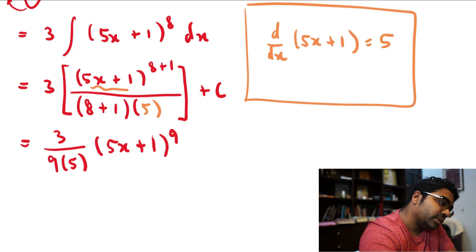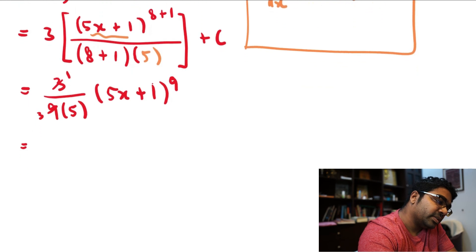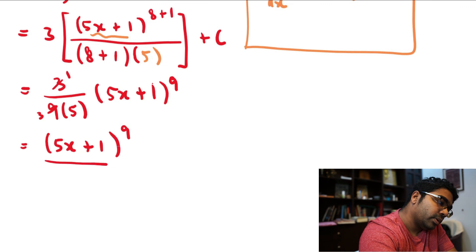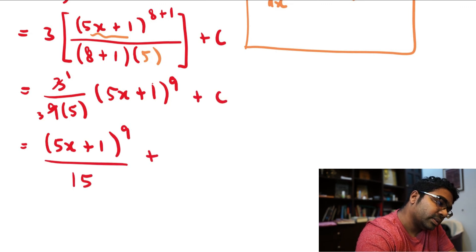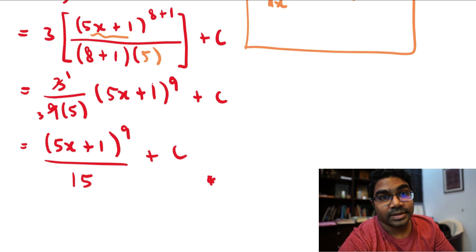So this simplifies to 1 over 15, which we can write as (5x plus 1) to the power of 9 over 15. Don't forget plus c. That's how we apply the formula. That's it for this video — I hope you've learned something. If you have, please hit the like button, it really does help a lot. Thank you very much, and I'll see you guys in the next one.